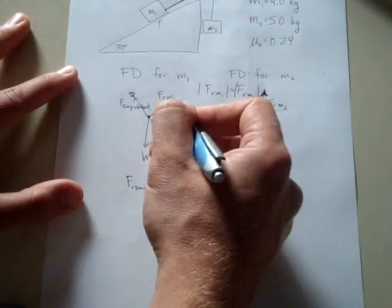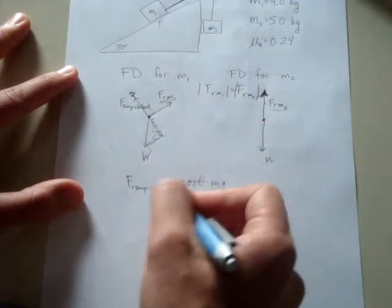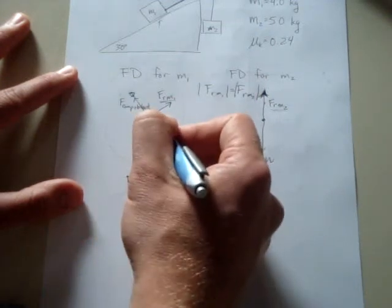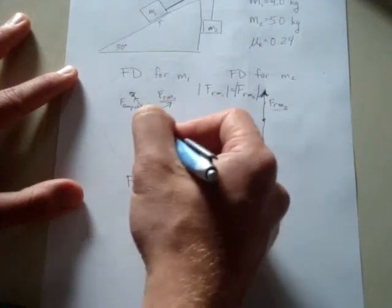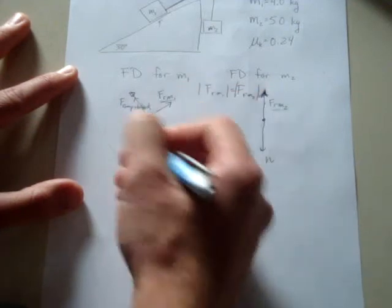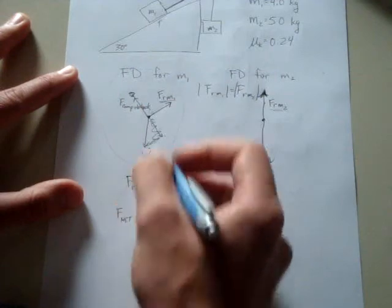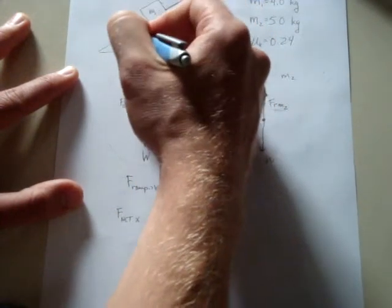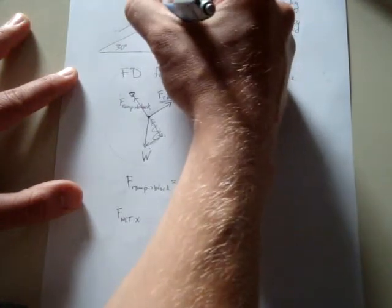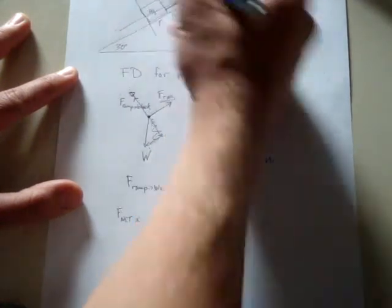We also know that for the sum of the forces along the edge of this thing, we know that the net force along, we could call this an x direction at least, where the x direction is along a path that's parallel to the ramp.